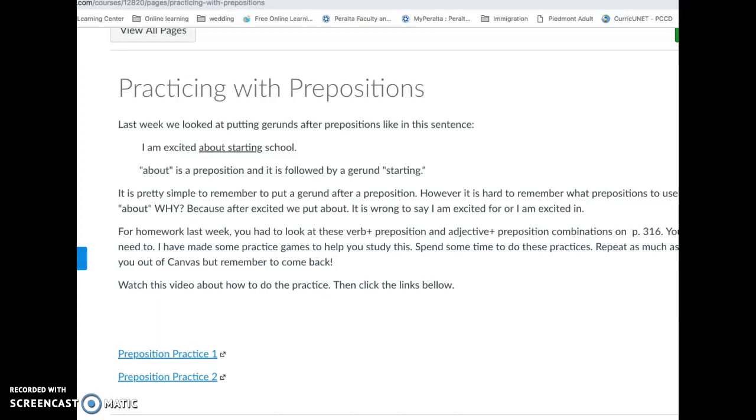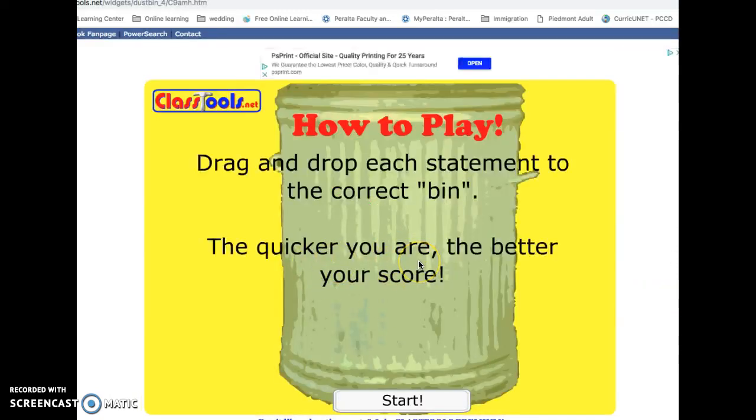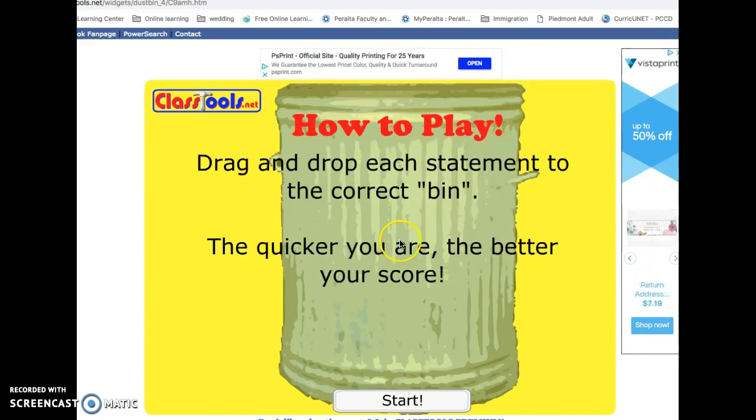So once you read this page, you're going to come down to where it says prepositions practice one. I'm going to tell you that you need Flash Player, so say yes or run or accept, and then you'll be at this page where it says how to play.